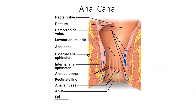At the anal canal, the rectum is the main portion with internal smooth muscle — muscles we don't consciously control as we're removing feces. The anus, though, has some skeletal muscle involved so we can consciously control when we have bowel movements. That's really the end of the rectum and the end of the digestive system.